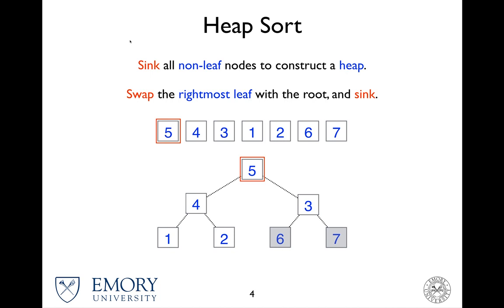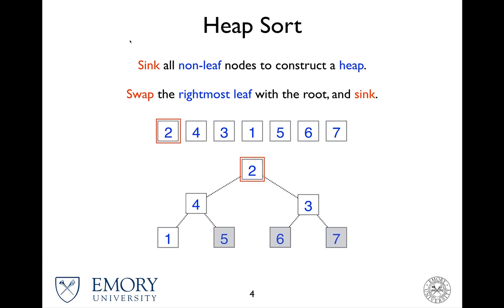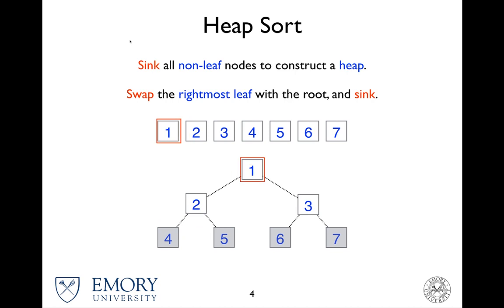Then this sinking is done. Move on — 2 gets swapped to the root, so 5 and 2 are swapped. Now we do the sinking: 4 is the maximum, so 4 and 2 are swapped, and that's done. So we move on to 1, which gets swapped to the root. It has to be sunk, so 3 is the maximum and 3 and 1 get swapped.